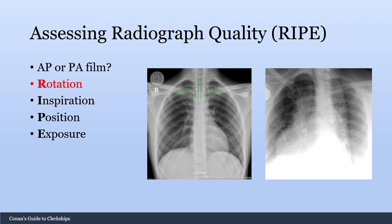Moving on to the RIPE mnemonic — the first letter R stands for rotation. You need to check that the clavicles are equidistant from the sternum to make sure that the patient is facing the x-ray head on. In a good quality radiograph the clavicles are roughly equidistant, but in a rotated patient the clavicles are very skewed to one side, which can cause artifacts such as a falsely widened mediastinum — you don't know if the widening is real or due to rotation.